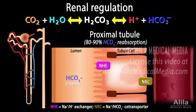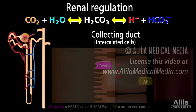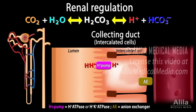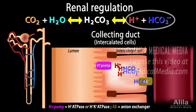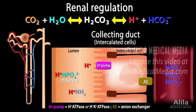While the proximal tubule basically returns filtered bicarbonate back to the blood, the downstream collecting duct generates new bicarbonate by actively secreting acids. As protons are depleted from the distal tubular cells, the equation shifts to the right, producing more bicarbonate, which then exits into the blood. Hydrogen ions secreted into the lumen combine with urinary buffers — mainly filtered phosphate and ammonia — to be excreted in urine.